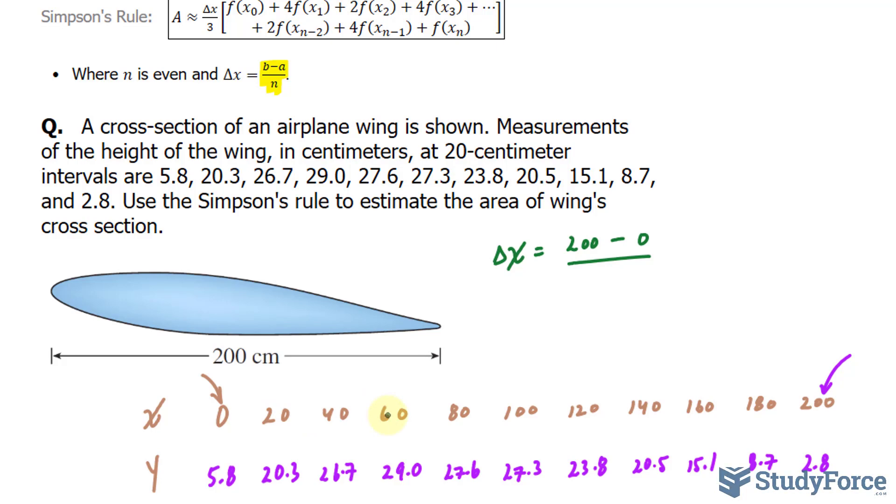We have 1, 2, 3, 4, 5, 6, 7, 8, 9, 10. So let's choose an N value of 10. And remember, N has to be even. And that's a good choice. So 200 minus 0 over 10 is 20.